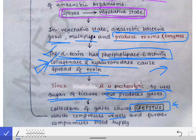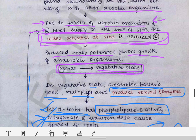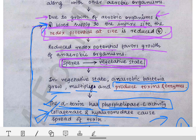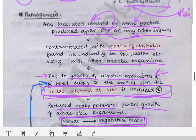This crepitus compresses the underlying blood vessels, further compromising blood supply. This creates a vicious cycle: reduced blood supply further lowers the redox potential, which promotes further Clostridium multiplication and more gas production, which causes more crepitus and further vessel compression. The cycle continues and worsens unless the condition is treated promptly.